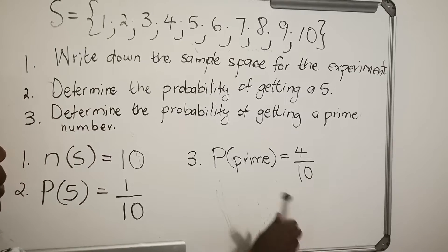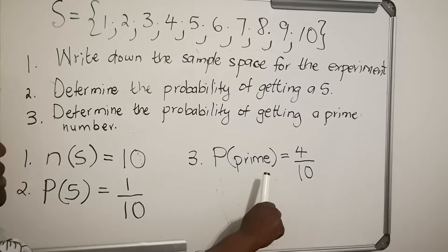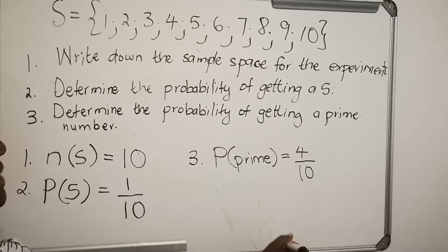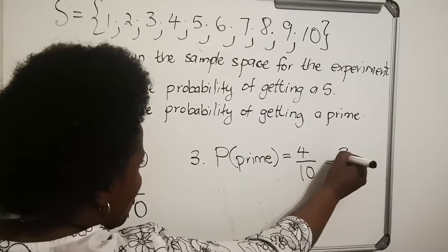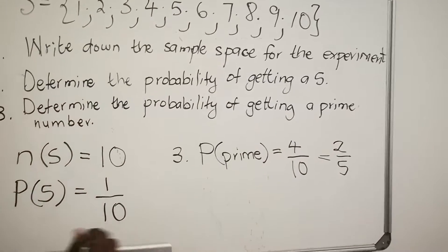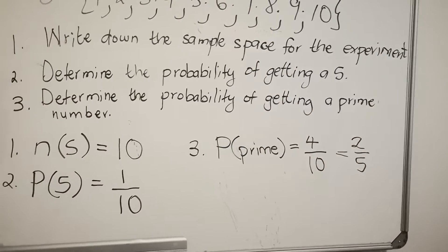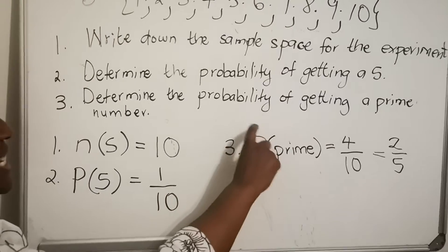Now with probability we leave the fraction in its simplest form, so this is going to be 2 over 5. Now I want you to notice another difference. The P you write it in capital letter, meaning probability.